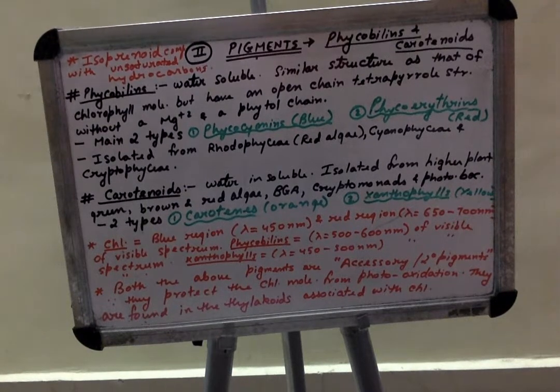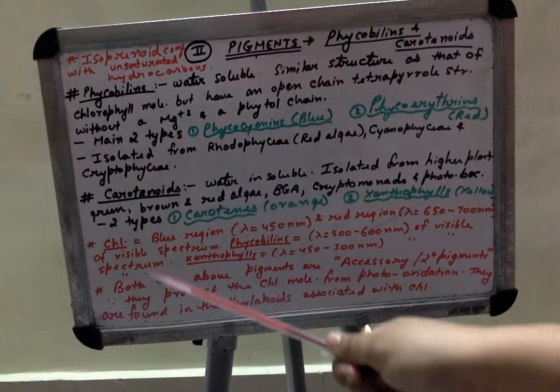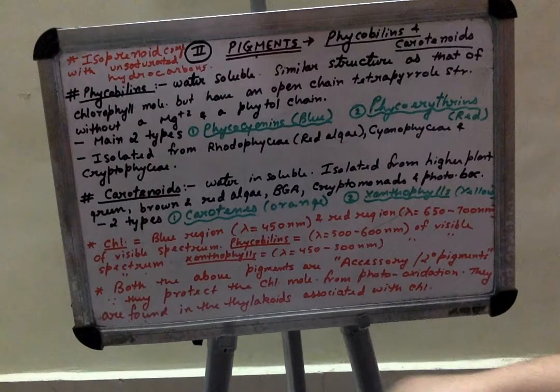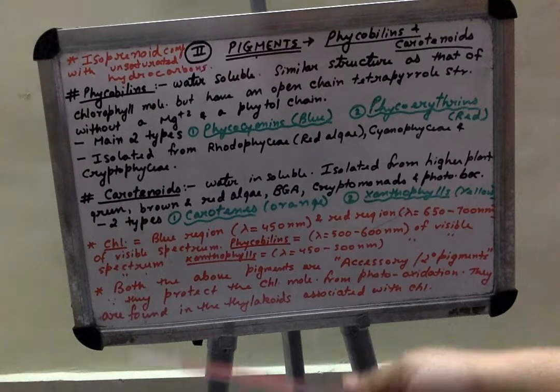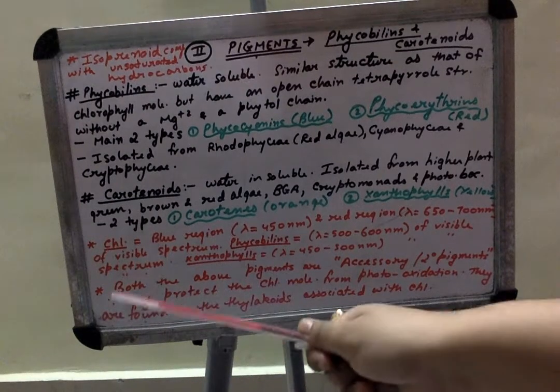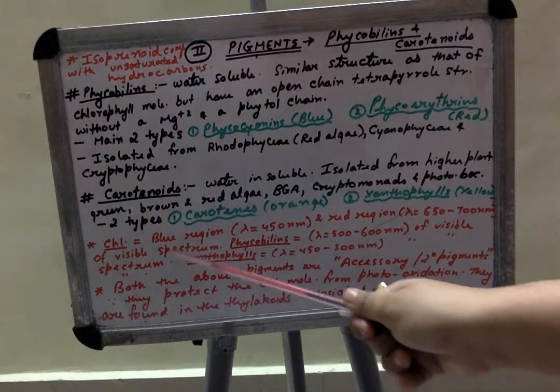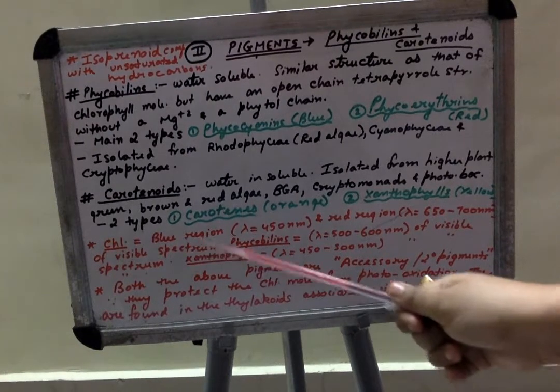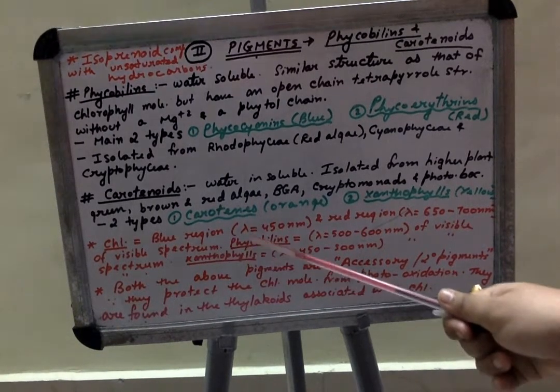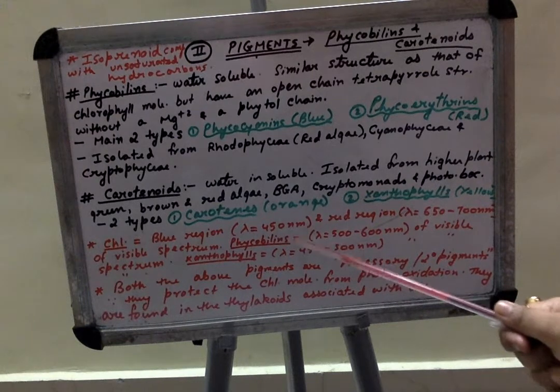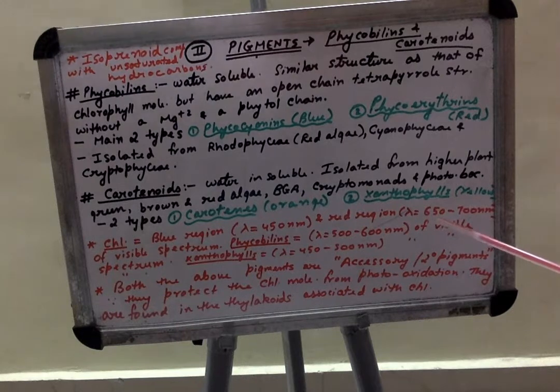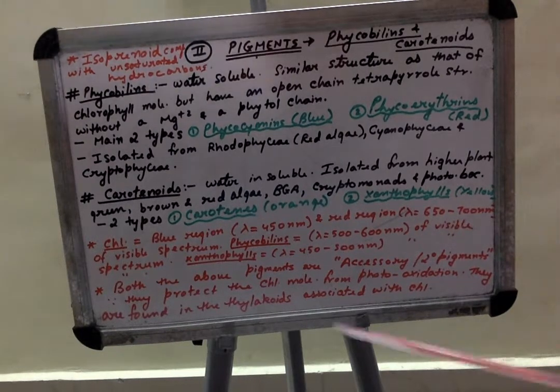Now there are a few points. All three chlorophyll molecules, that is a, b and c, all these absorb blue rays in the region of blue colored rays between the range of 450 nanometers. And in case of red region, the absorption spectrum is between 650 to 700 nanometers of visible spectrum.